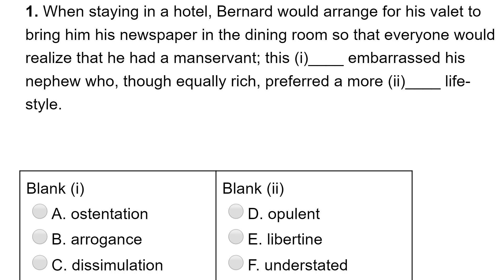Here we go. When staying in a hotel, Bernard would arrange for his valet to bring him his newspaper in the dining room so that everyone would realize that he had a manservant. This something embarrassed his nephew. The options: ostentation is very likely correct — ostentation means a showy display of wealth, which is kind of what he's doing here. Arrogance doesn't quite fit because bringing in a manservant isn't necessarily arrogant. Dissimulation is kind of like lying, so it's not that. Pretty sure it's ostentation.